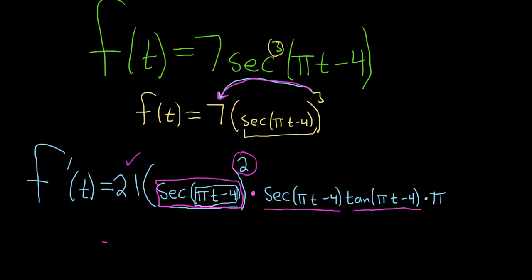The last thing to do in this problem is maybe just clean it up a little bit. This is equal to - so 21 pi. Let's put that in the front. Now here we have secant squared, and here we have secant to the first power. We put those together. Let's go back to our beautiful shorthand. That will give us secant cubed of pi t minus 4.